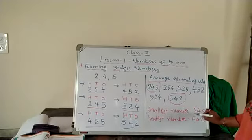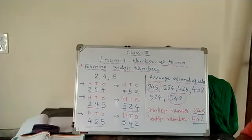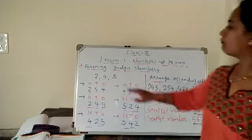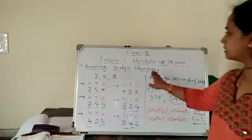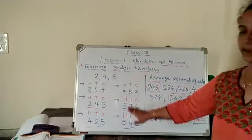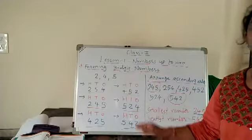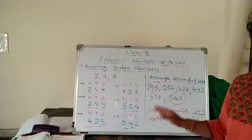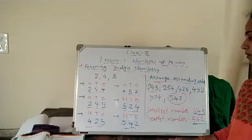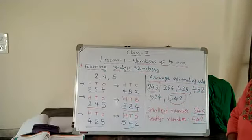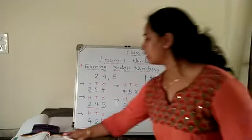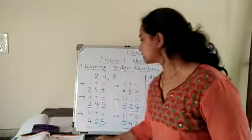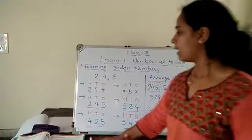Okay, now you got it. Smallest number — and now you can form 3-digit numbers first, then identify the greatest number and smallest number. I think you can understand this.